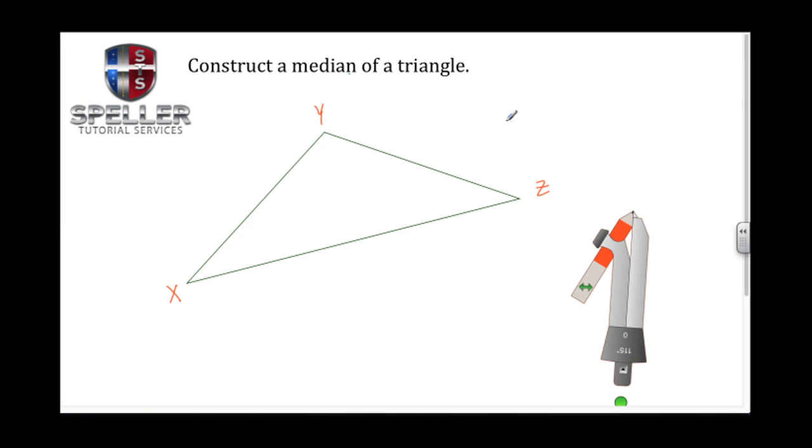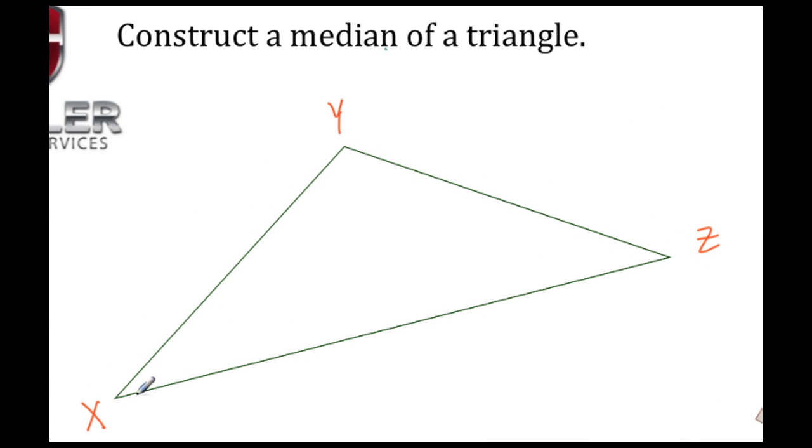Welcome back to Speller Tutorial Services. In today's video, we're going to construct a median of a triangle. A median is a line segment that goes from a vertex—here we'll say X—all the way to the midpoint of the opposite side. In this case, the midpoint of the opposite side would be the midpoint between segment YZ, and that's what we're going to create.